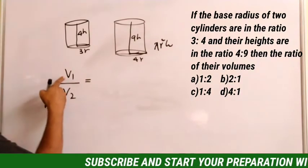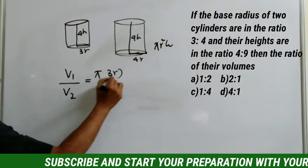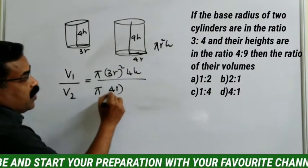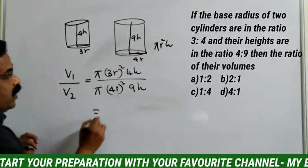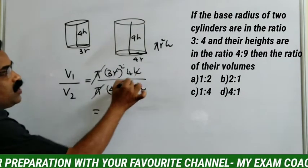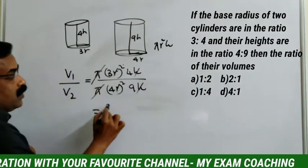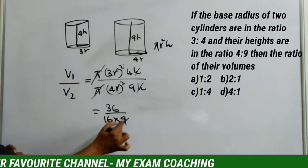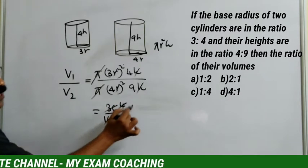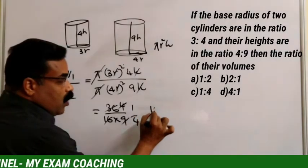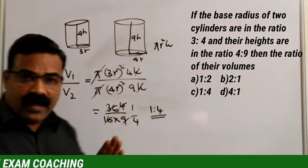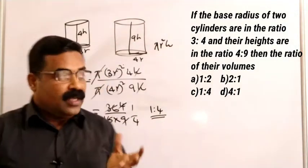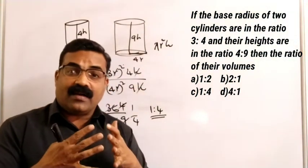Volume₁ = π(3r)²(4h) and Volume₂ = π(4r)²(9h). Cancelling π, r², and h: we get (9 × 4) : (16 × 9) = 36 : 144. Simplifying, we can cancel 9 and 4 to get 1:4. These types of questions are very common in SSC CGLE. We need to know the volume, curved surface area, and total surface area of shapes like cylinders, cones, spheres, and cuboids.